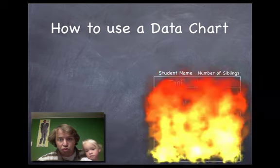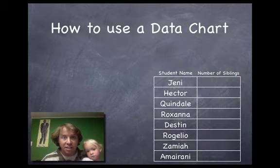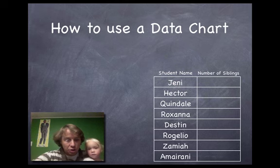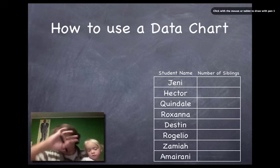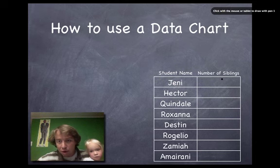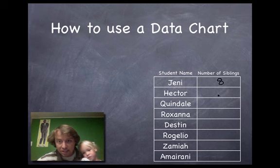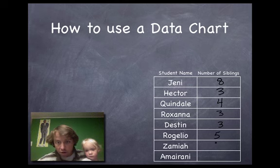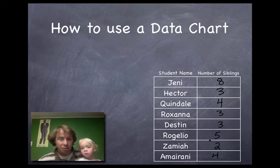So I'm going to go ahead and pull up our data chart from last time. I don't know if you guys remember this. I fixed it. So we had Jenny. If this data chart looks weird to you and you're going, I don't remember this, it's probably because you didn't watch the first video. So we said Jenny had 8 siblings, Hector had 3, Quindel had 4, and then both Roxanna and Destin had 3 siblings.